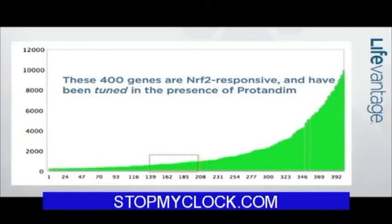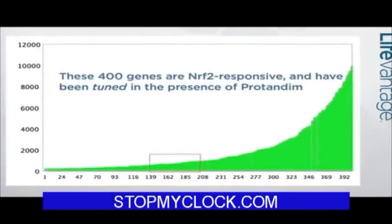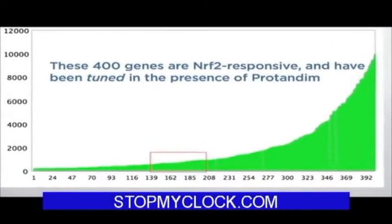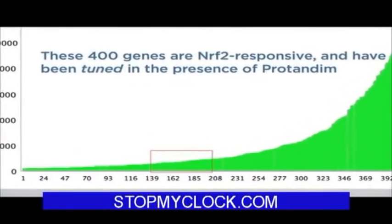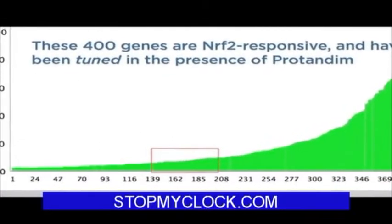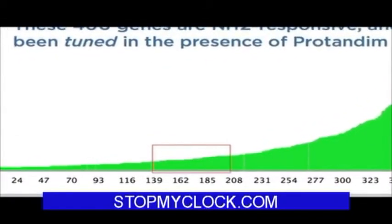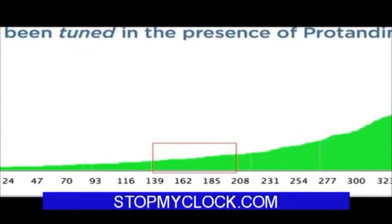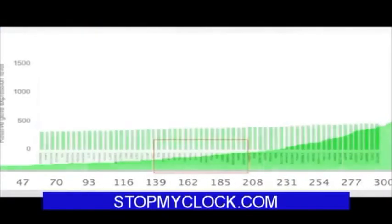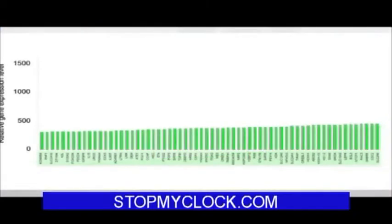This is the way those 400 genes are expressed when oxidative stress is low, so we could call this a properly tuned genome. Because you can't see the individual genes when there are that many, I've taken a little area in the center part of this — randomly, in that red box — which is about 63 genes, and we're going to look at that a little more closely.